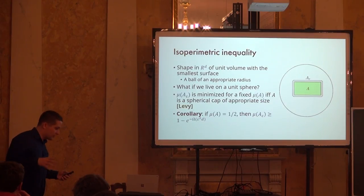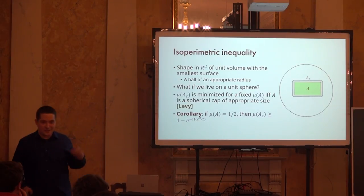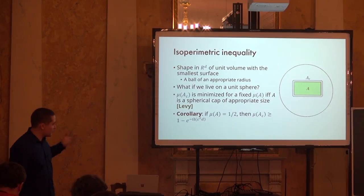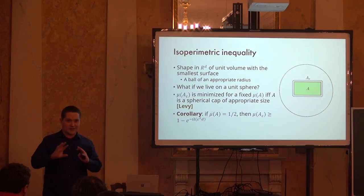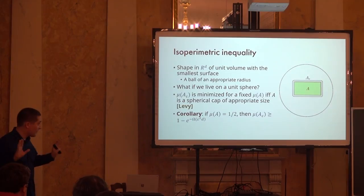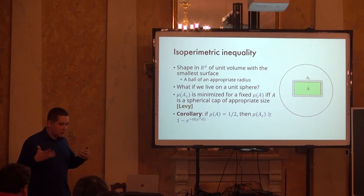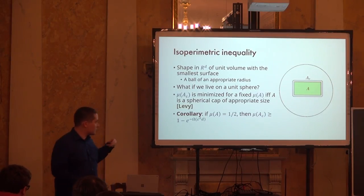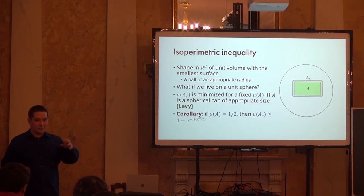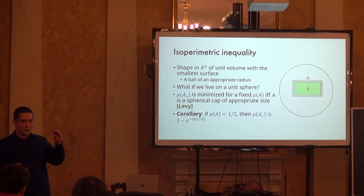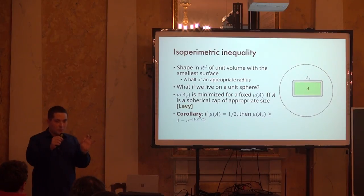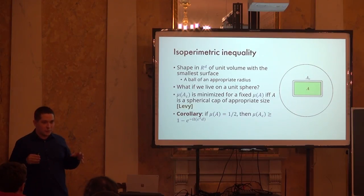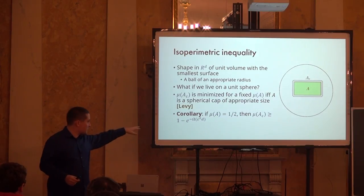Combining concentration of measure on the sphere with the isoperimetric inequality gives something completely mind-blowing. Take any set on the sphere with measure 1/2. How many points are within distance epsilon of it? To minimize the size of A_epsilon, take a spherical cap — which of measure 1/2 is just half the sphere. For half the sphere, almost all points are within a very small distance of it. So if you start with any set of measure 1/2 and move epsilon away from it, you cover almost the entire sphere in terms of measure — exponentially close to 1.